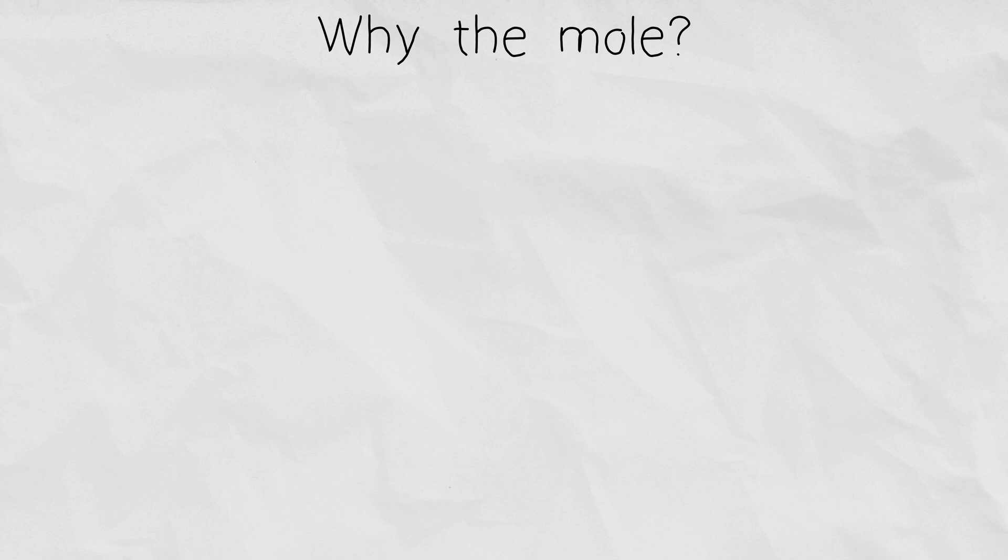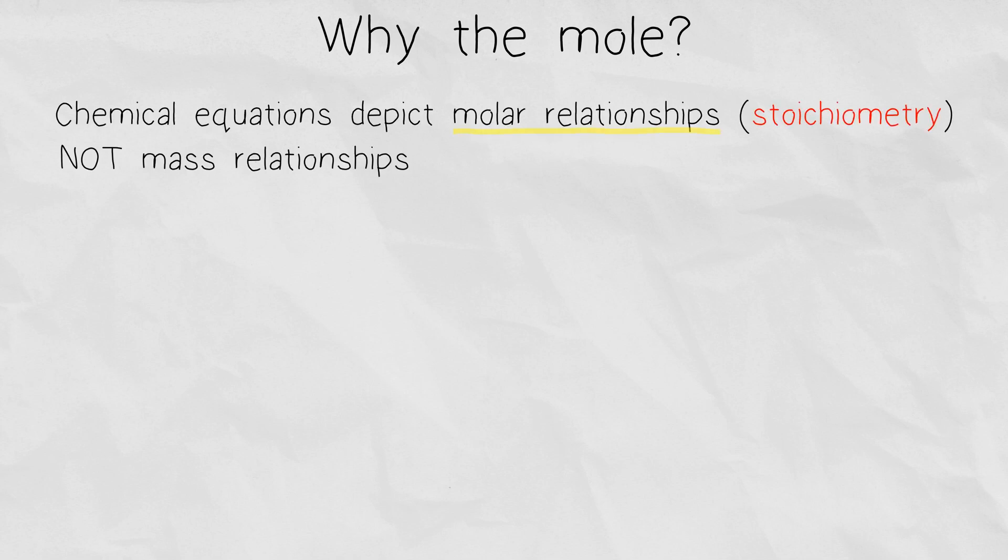Why is it important to count chemicals in moles, and why is it such a massive number? There's no way we can actually count that many molecules with such precision, so why not use something simple like the mass? Well, that's because chemical reactions depict molar relationships of reactants and products. This is known as stoichiometry, and it's a really important term in chemistry. Stoichiometry is the ratio of substances you need to complete a reaction.